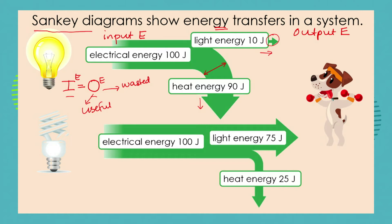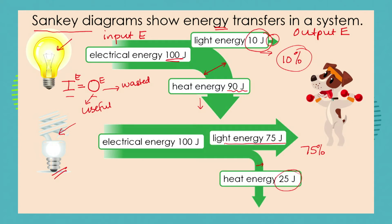In our last lesson we compared a filament light bulb with an energy saver light bulb and we saw that our filament light bulb only produced 10% of the input energy as useful output energy. The rest of the energy was wasted as heat. However, with an energy saver light bulb, 75% of our energy is useful and only 25% is wasted. This is shown with a smaller arrow compared to a larger arrow for our useful energy. Now let's take this knowledge and start applying it to other appliances that you use every day in your home.